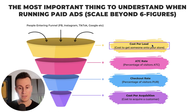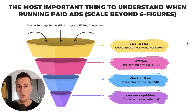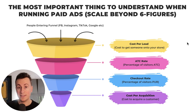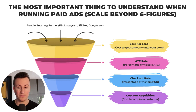Once somebody is onto your website, the next process a customer will take on your store is to hit that add to cart button. This is your add-to-cart rate — essentially the percentage of visitors. So if you get 100 people onto your Shopify store and 10 of those hit that add to cart button, your add to cart rate is 10%. The next step in the buyer's process is the checkout rate: the percentage of people who come onto your site and then actually complete the checkout and buy your product.